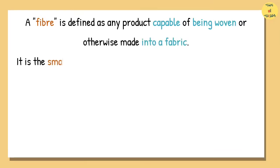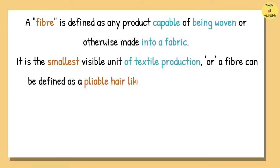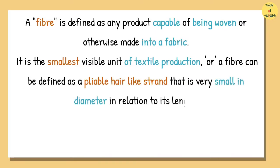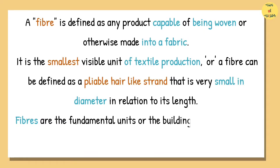It is the smallest visible unit of textile production, or a fiber can be defined as a pliable hair-like strand that is very small in diameter in relation to its length. Fibers are the fundamental units or the building blocks used in the making of textile yarns and fabrics.